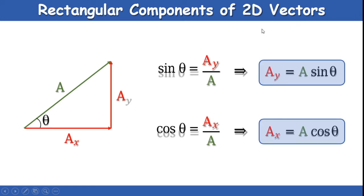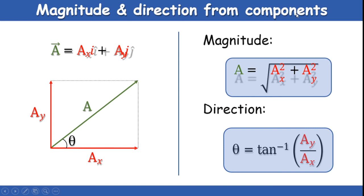From the figure, sin θ equals Ay/A, so Ay equals A·sin θ; and cos θ equals Ax/A, so Ax equals A·cos θ. The magnitude is A equals √(Ax² + Ay²) and the direction is θ equals tan⁻¹(Ay/Ax).